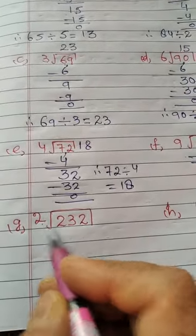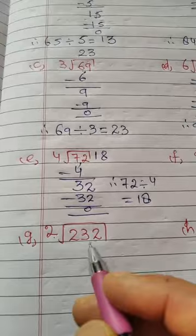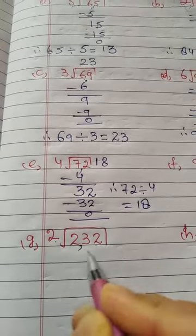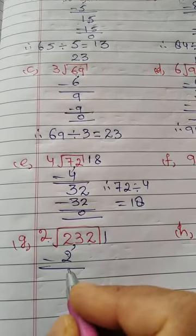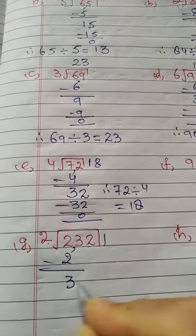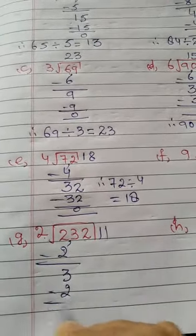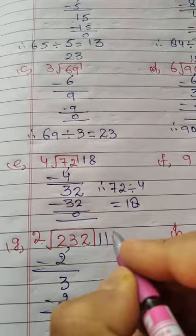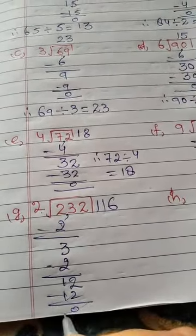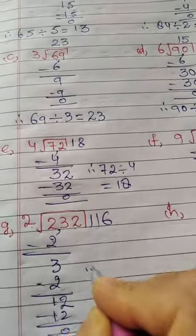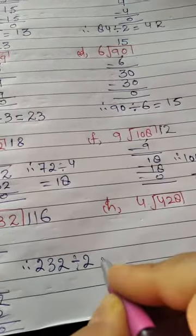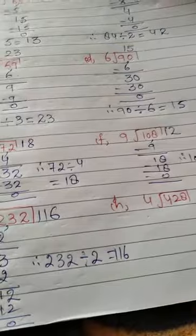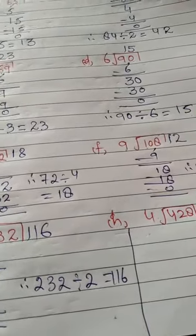232 divided by 6. 2 twos are 4, 2 minus 2 is 0. 3: 2 sixes are 12, 12 minus 12 is 0. Therefore 232 divided by 6 equals 116.